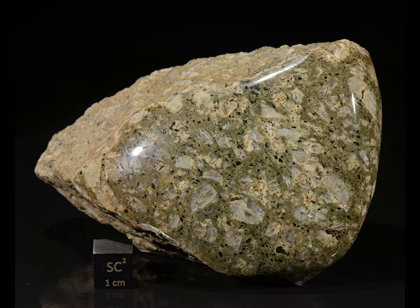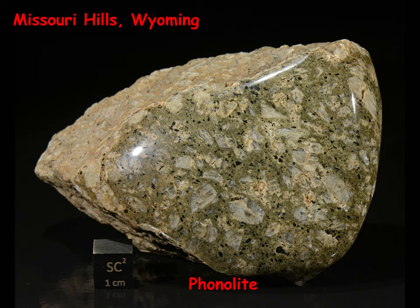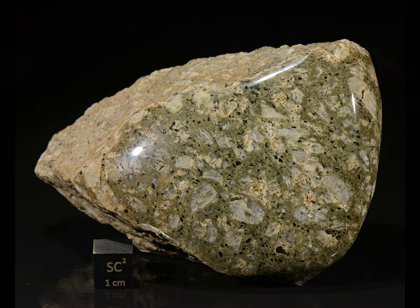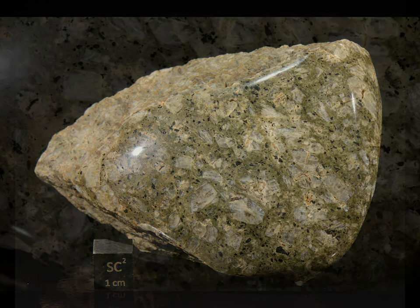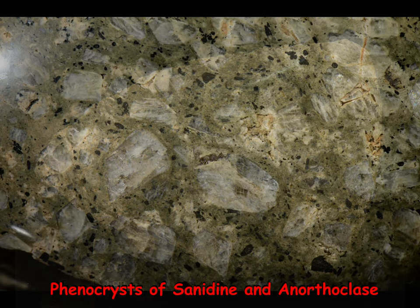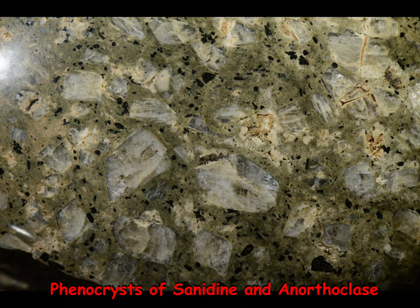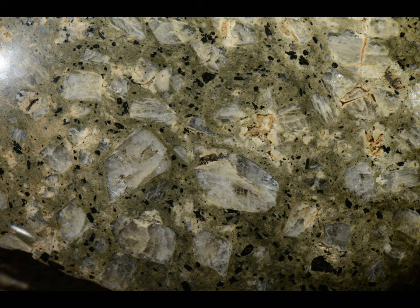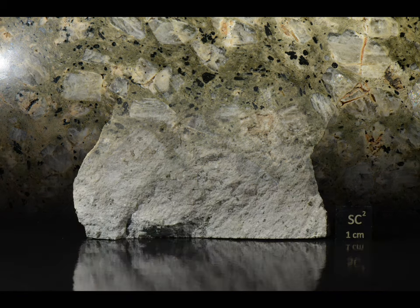About three and a half miles northwest of Devil's Tower, Wyoming, are the Missouri Hills. These consist of phonolite, as does Devil's Tower itself. Here the phenocrysts are feldspars — sanidine and anorthoclase. Phonolite is an extrusive igneous rock that is generally porphyritic. The groundmass in this example is the olive green fine-grained filler between the phenocrysts.